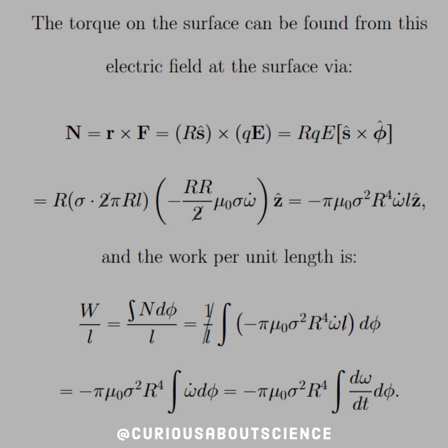This simplifies down after we cancel twos and combine everything, and we get negative pi mu naught sigma squared R to the fourth omega dot L in the Z hat direction. Now, since we want the work per unit length, that's W divided by L, which, we have W equals N d phi in the integral formulation. So we have a factor of L that we can factor outside and put as a fraction. With that, we see that the L's cancel, as to be expected.